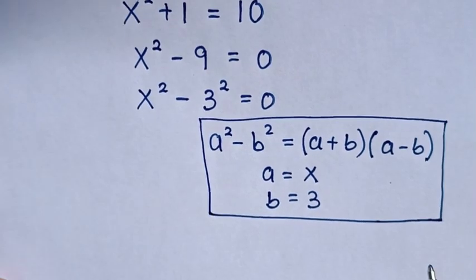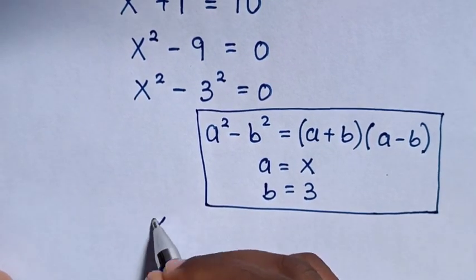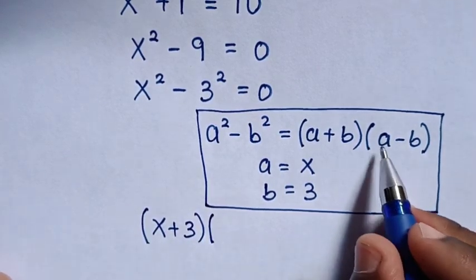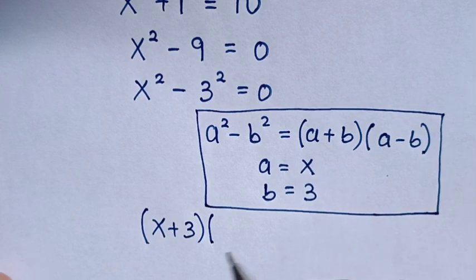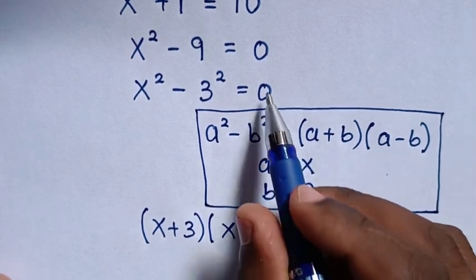Then in next step, our equation will be a plus b is (x + 3) times a minus b is (x - 3) is equal to 0.